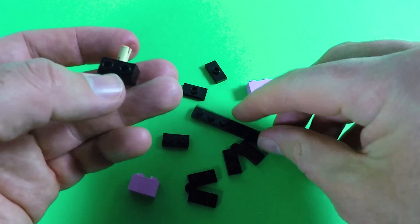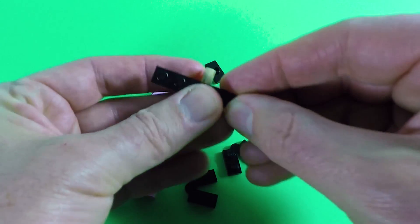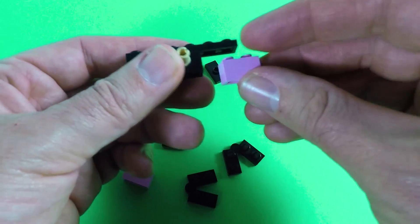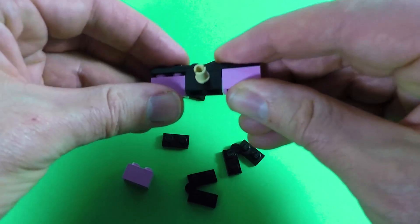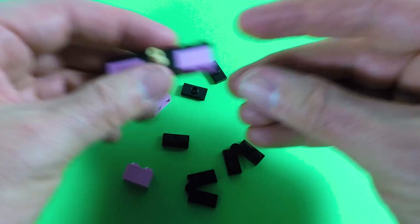But we want something a little bit bigger than that, so let's put on a 6x1 plate. And on this side we're going to put a 2x1 brick and another 2x1 brick. Now you can use any color you like.